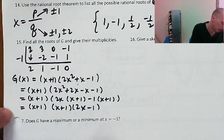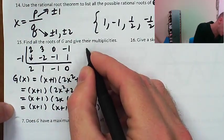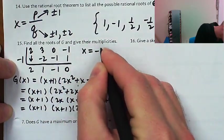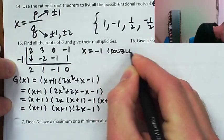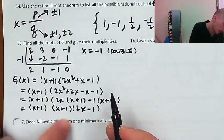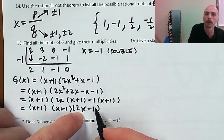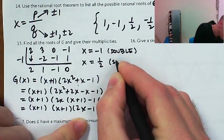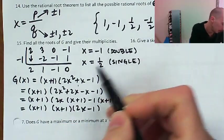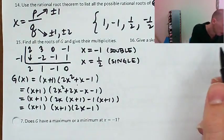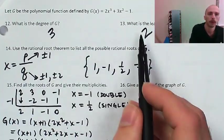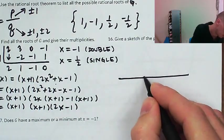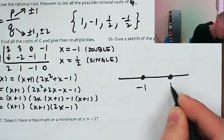So as far as writing out the zeros: this equals zero at x equals negative 1, and that factor appears twice, so it's a double root. And then 2x minus 1 could equal zero if x equals positive one half, and that's just going to be a single root. Since x equals one half was a possible rational root, that's a good sign.